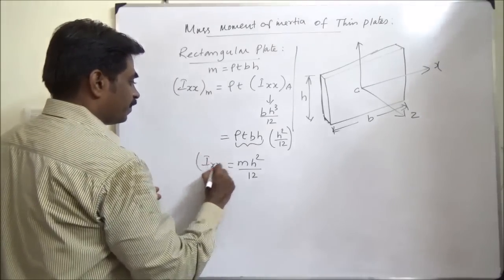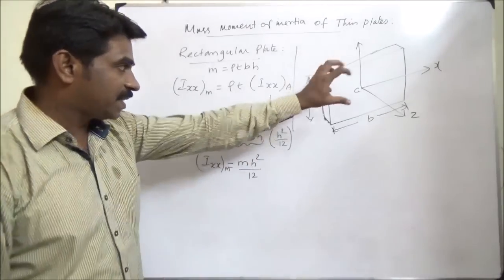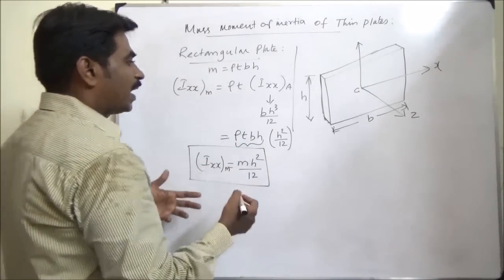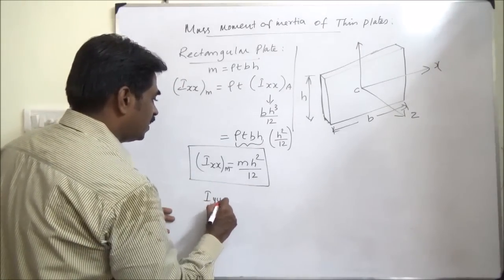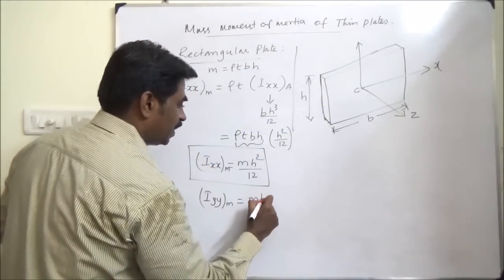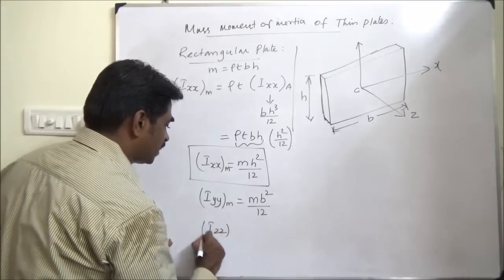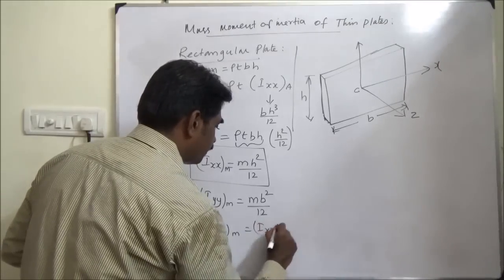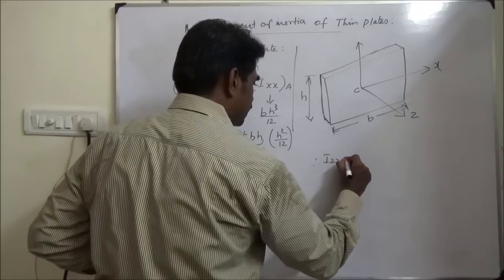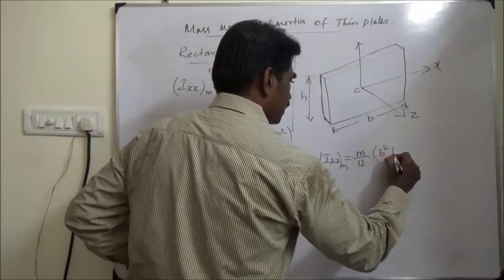So the mass moment of inertia about the x-axis for the rectangular plate is M·H²/12. Similarly, Iyy_m = M·B²/12 — instead of height, it becomes B. Then Izz_mass = M(B² + H²)/12.